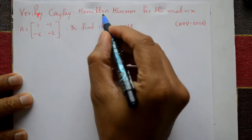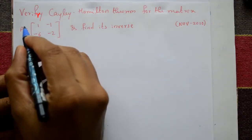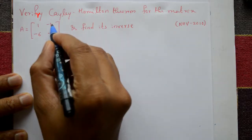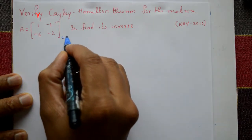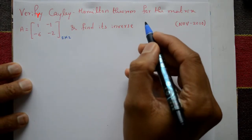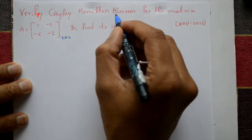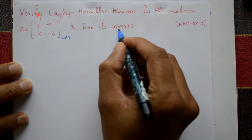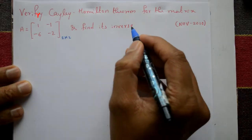Verify the Cayley-Hamilton theorem for the matrix A = [[1, -1], [-6, -2]], which is of order 2×2, and find its inverse. First we verify the Cayley-Hamilton theorem, then find the inverse of the matrix.